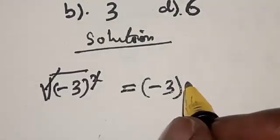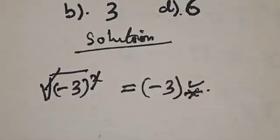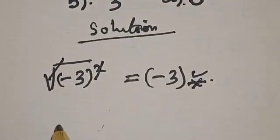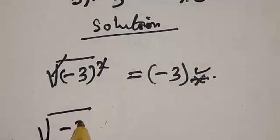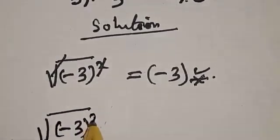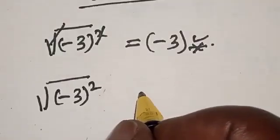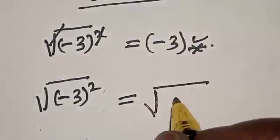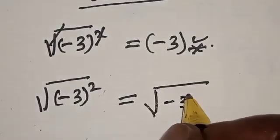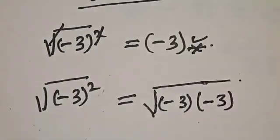Is that our answer? No, that is not our answer. So let's solve properly. We have square root of minus 3 squared. Then we know that this is equal to square root of minus 3 multiplied by minus 3.